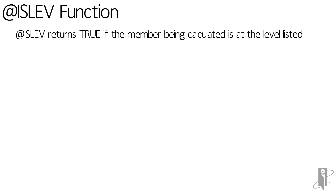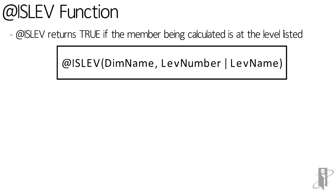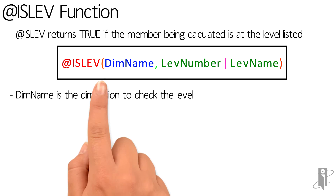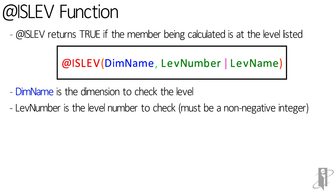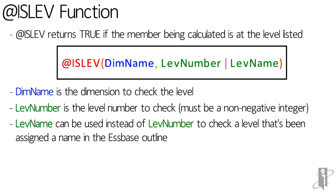ISLEV returns true if the member being calculated is at the level listed. In our syntax we have: ISLEV open parentheses, dim name, comma, and either lev number or lev name, followed by closed parentheses. Dim name is the dimension we want to check for the level. Lev number is the level number we want to find, and it must be a non-negative integer, meaning it can be zero and up.